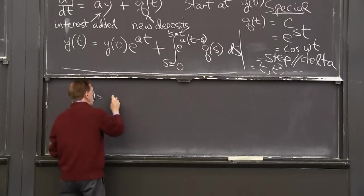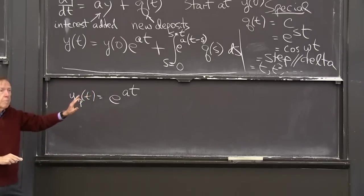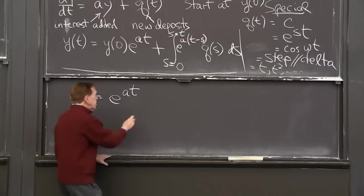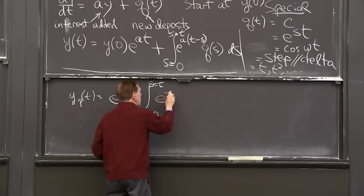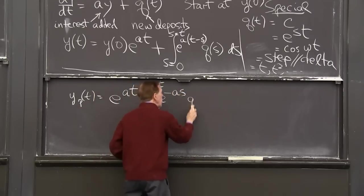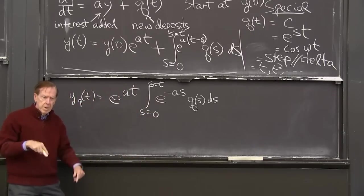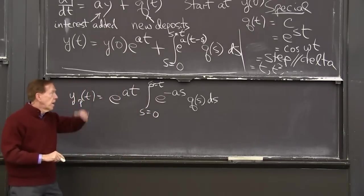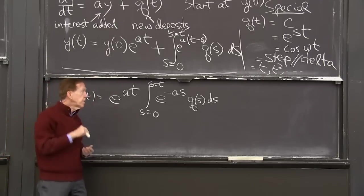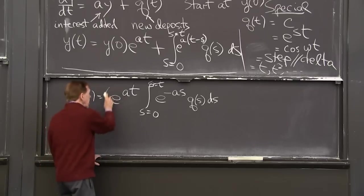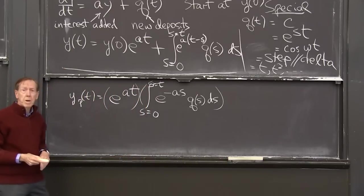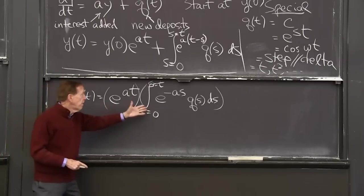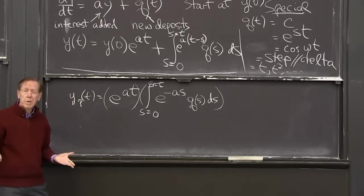And I'll factor out the e to the a t, because it doesn't depend on s. It's not involved in the integration. So this is then the integral from s equal 0 to s equal t of e to the minus a s. That has an s in it. Q of s ds. This is all the stuff that depends on what time the deposit was made time s, and what time we're looking at the balance, the later time t. OK. This is a product of one term times another term. And when I put it into the differential equation, I'll use the product rule.